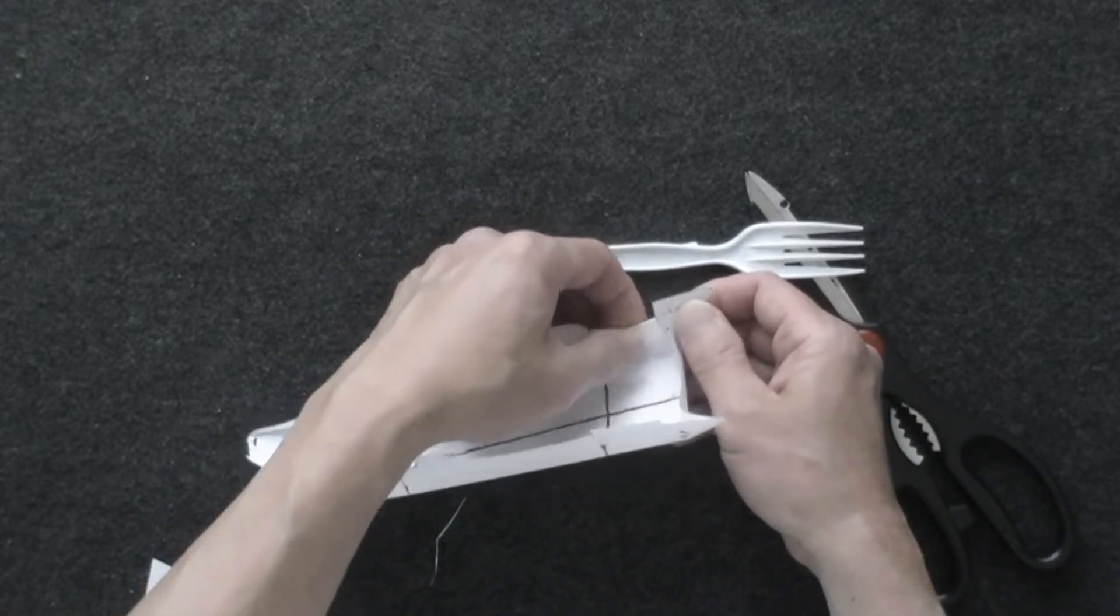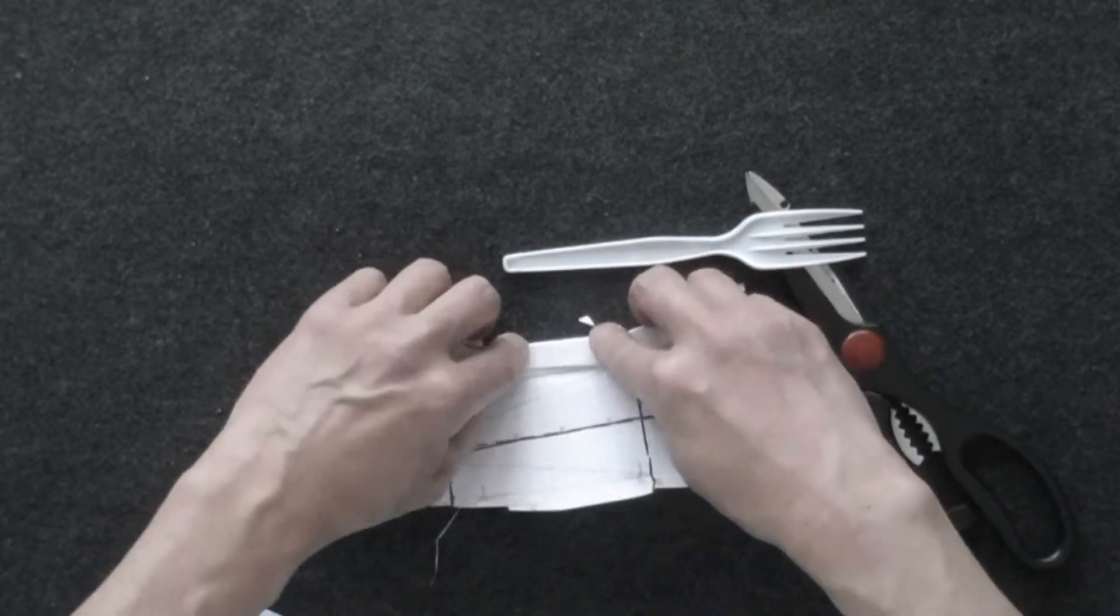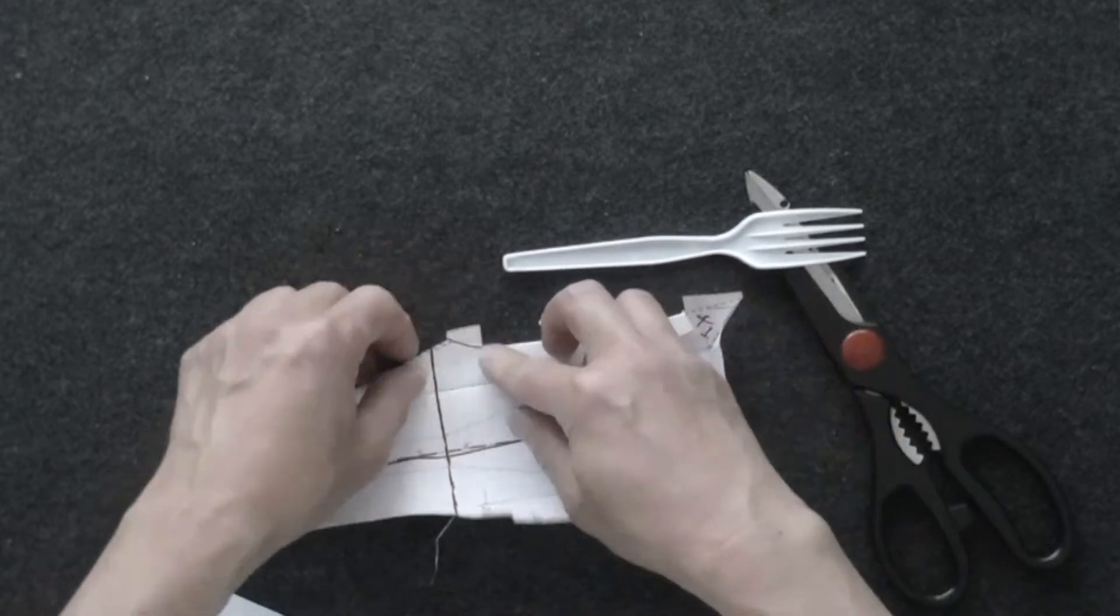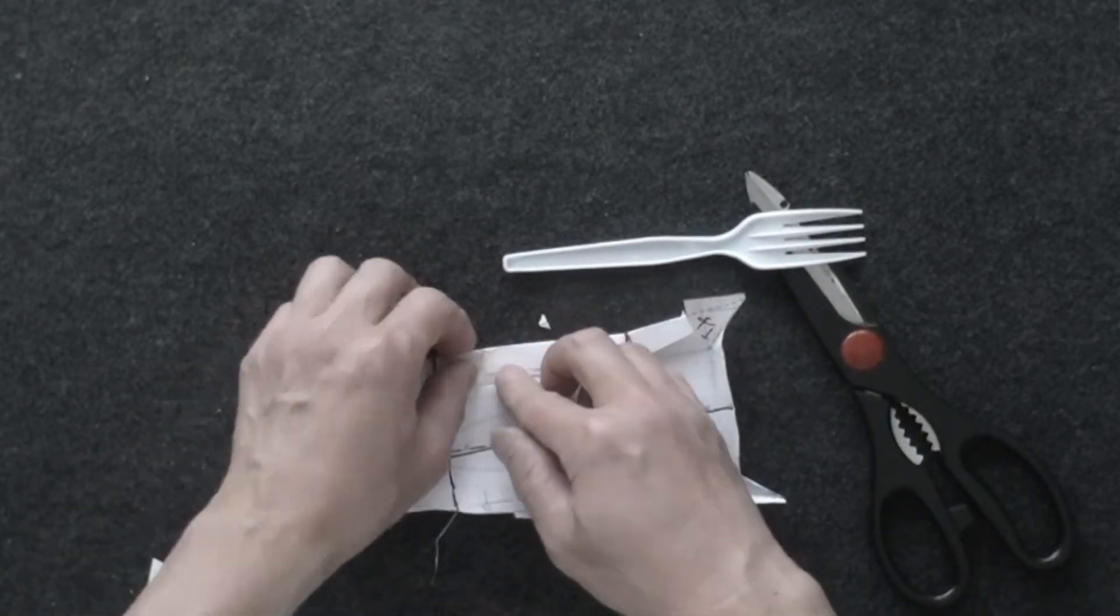I fold this extra piece of corpus back against the side wall. Actually, I glue it. It will strengthen the side wall, make the wall much more rigid and robust.